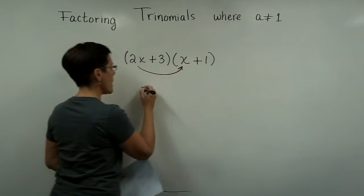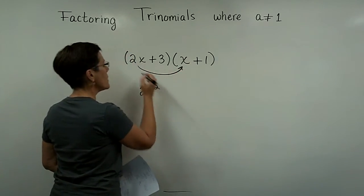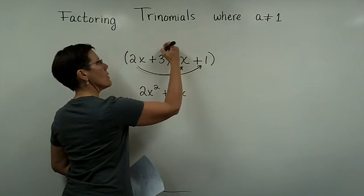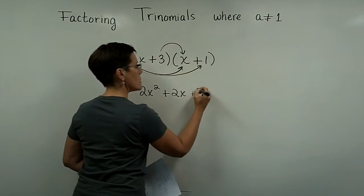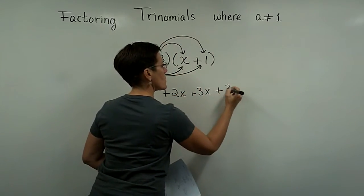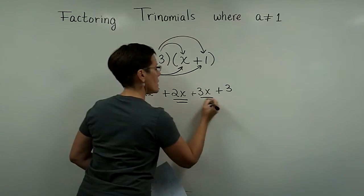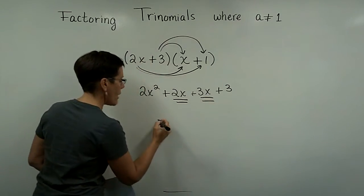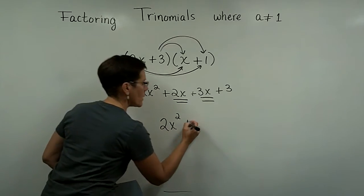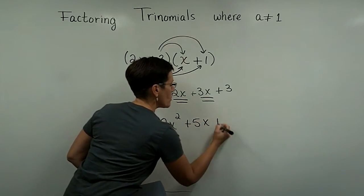So 2x times x is 2x squared. And 2x times 1 is 2x. 3 times x is 3x. And 3 times 1 is 3. And finally, these are my like terms. They add to be 5x. So I have a trinomial that is called 2x squared plus 5x plus 3.